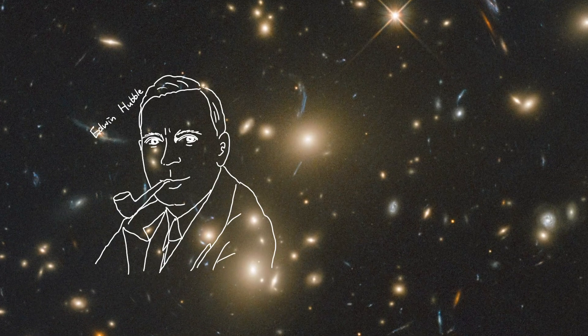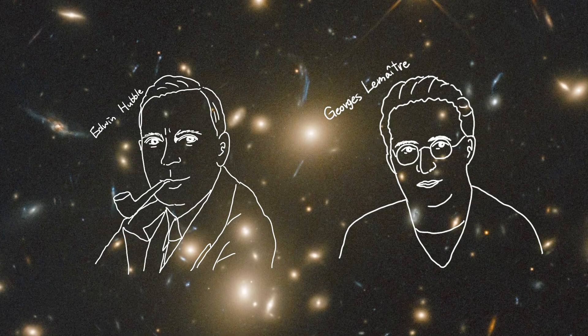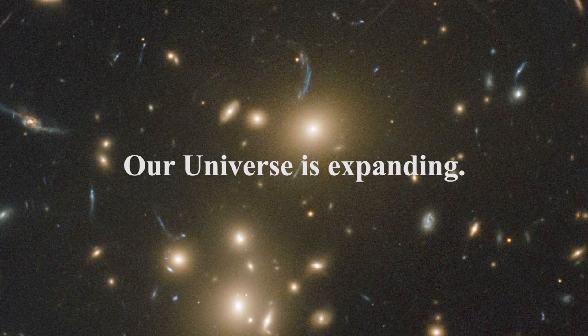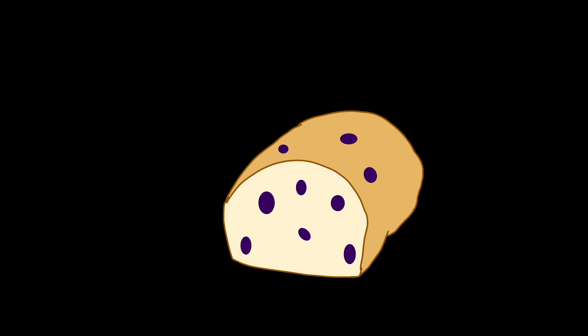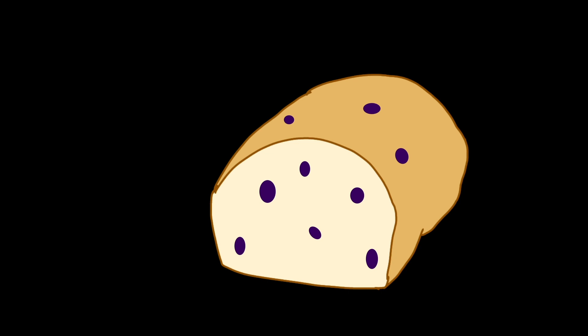About a hundred years ago, astronomers Edwin Hubble and Georges Lemaître made the incredible discovery that the universe is expanding. They saw that all the galaxies in the universe were moving away from each other. You can think of this expansion as being similar to a loaf of bread rising — as the dough expands, it carries nuts or raisins inside the bread away from each other. In a similar way, as space expands, it carries galaxies away from each other.